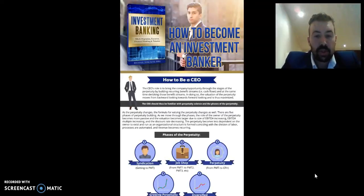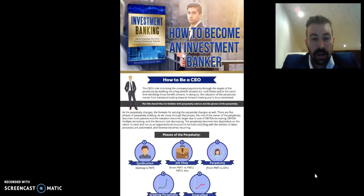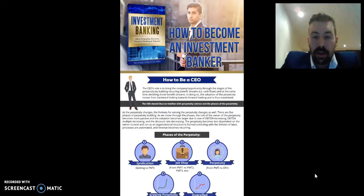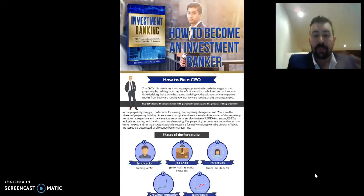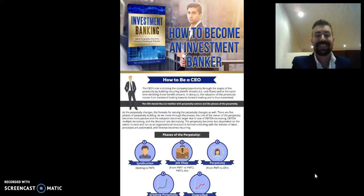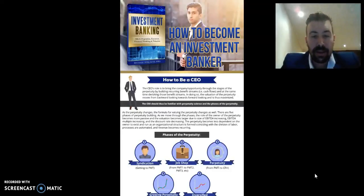Phase two is job shop — moving from payment one, payment two, disparate payments, through to more payments. And as we finally get to the perpetuity, we move from separate individual payments to a contiguous or recurring cash flow stream. That's where we get to cash flow over R.